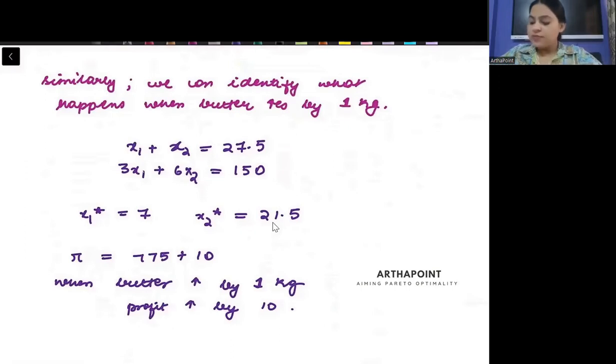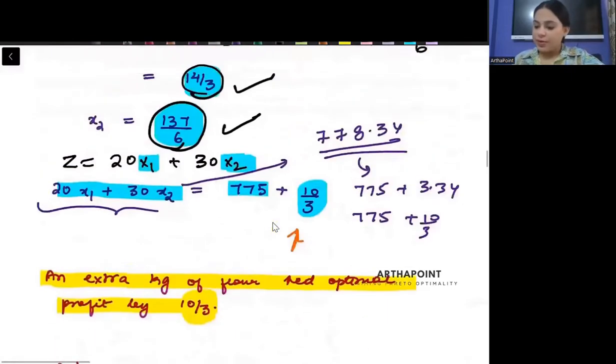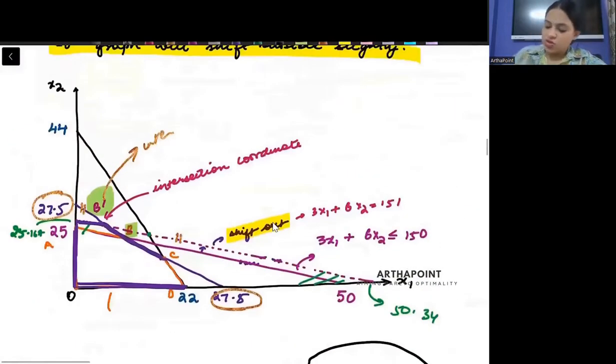Suppose I go ahead and I increase the butter by 1 kg. So, butter 27.5 ki jaga par I will put as 28.5. What will happen now in that case? If I just go back to these equations, then in that case, this is going to happen.